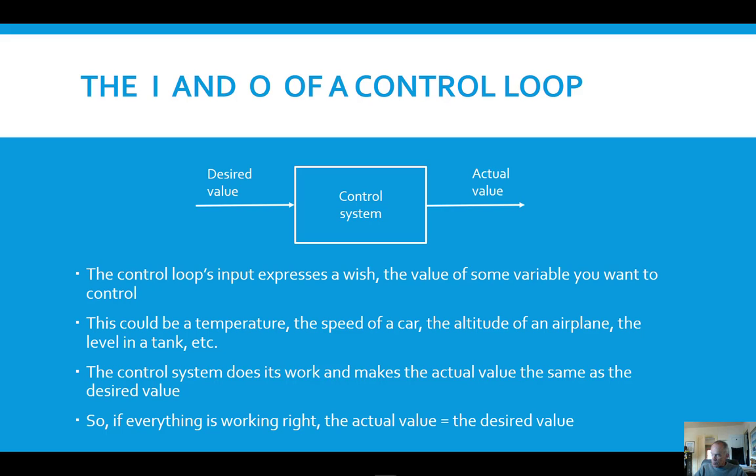A good example of this would be a cruise control on a car. You get the car up to speed and then you engage the cruise control and the current speed of the car at that time becomes the desired value. It's written in the memory in the computer that controls the car nowadays and it strives to maintain that speed for the car under varying conditions of load.